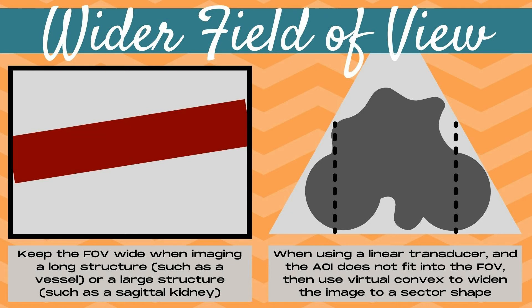When using a linear transducer, such as during a breast ultrasound, if the area of interest — for example, a breast mass — does not fit into the field of view, you can use the virtual convex button to widen the field of view to a sector shape so that more of the large mass fits into the image. On the image to the right, you'll note the black dotted lines, which mark the edge of the field of view in its linear shape. When the virtual convex button is pushed, the field of view is extended and more of the mass is visualized. When possible, try to show a strip of normal tissue on each side of the mass.